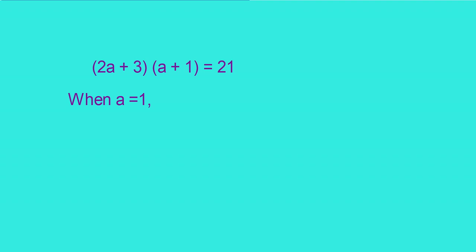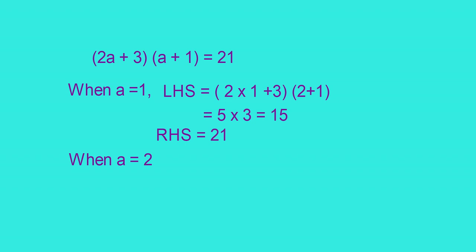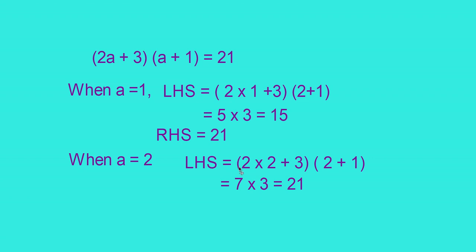Now here is an equation: 2a plus 3 into a plus 1 is equal to 21. When a is equal to 1, the LHS is 2 into 1 plus 3, into 1 plus 1, that is 5 into 3 equals 15. But the RHS is 21. So the equation is not true for a equal to 1. When a equals 2, the LHS is 2 into 2 plus 3, into 2 plus 1, that is 7 into 3 equals 21, and the RHS is also 21. So this equation is true when a equals 2. That is, an equation is not true for all values of its variable.